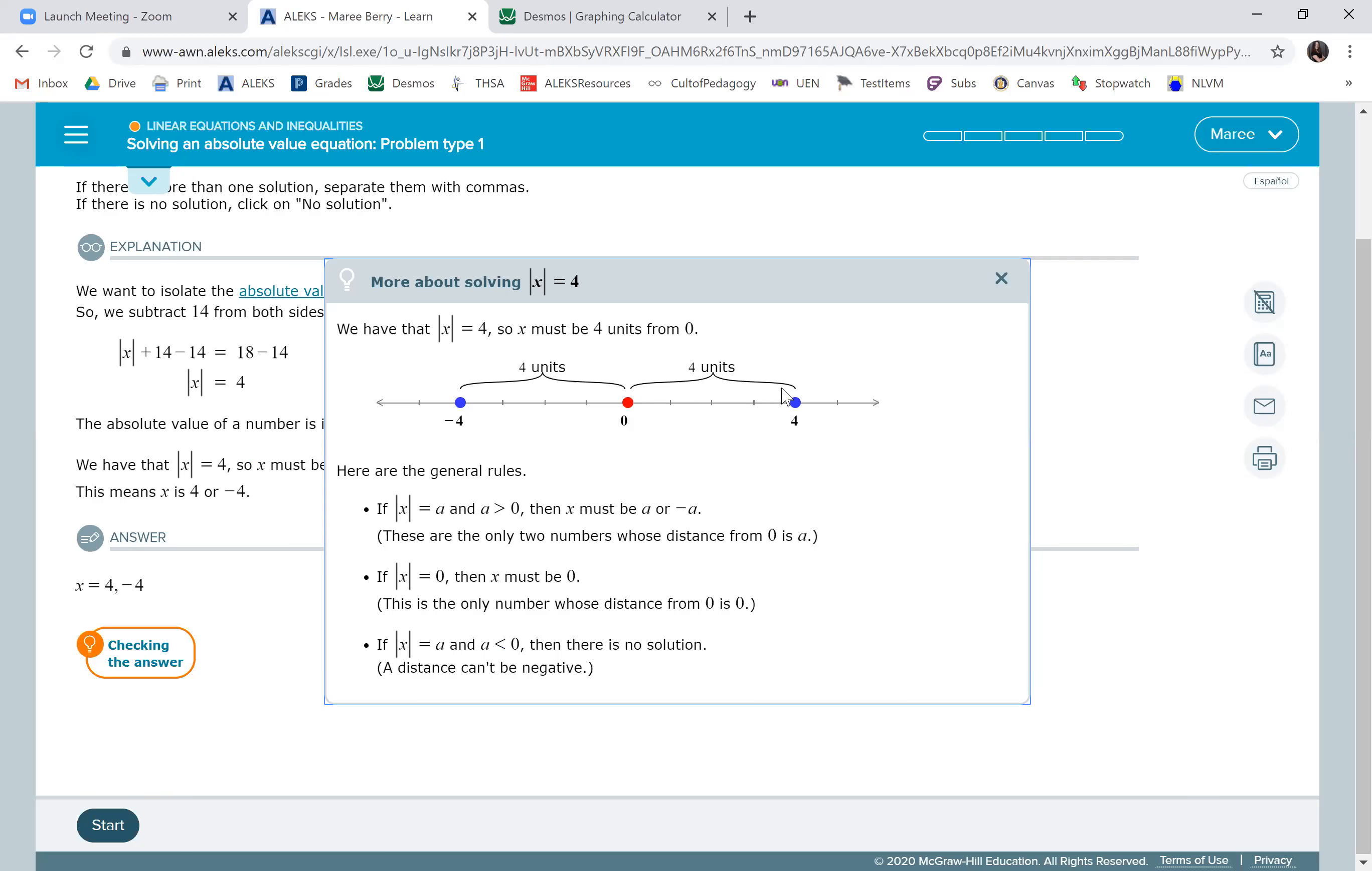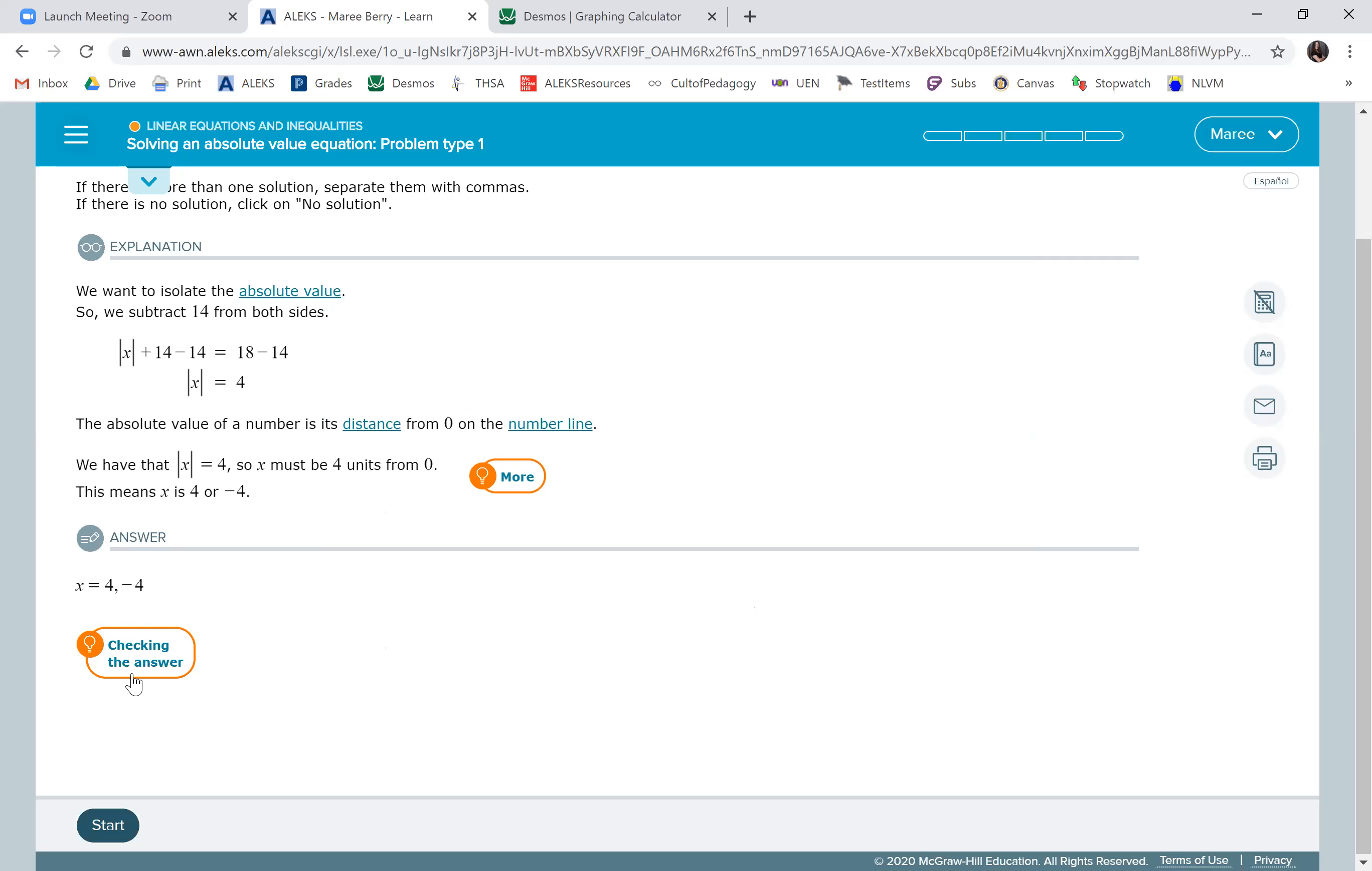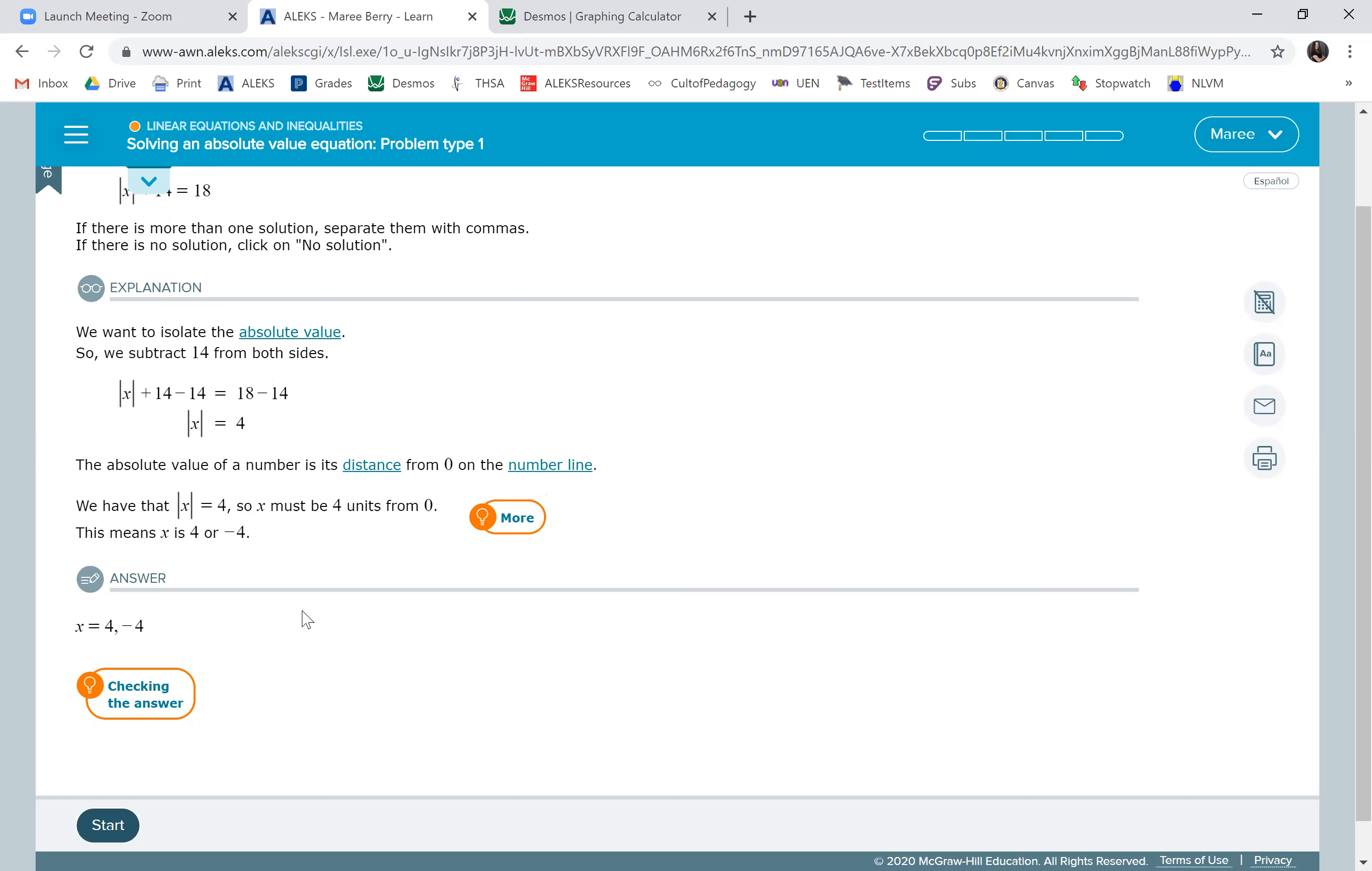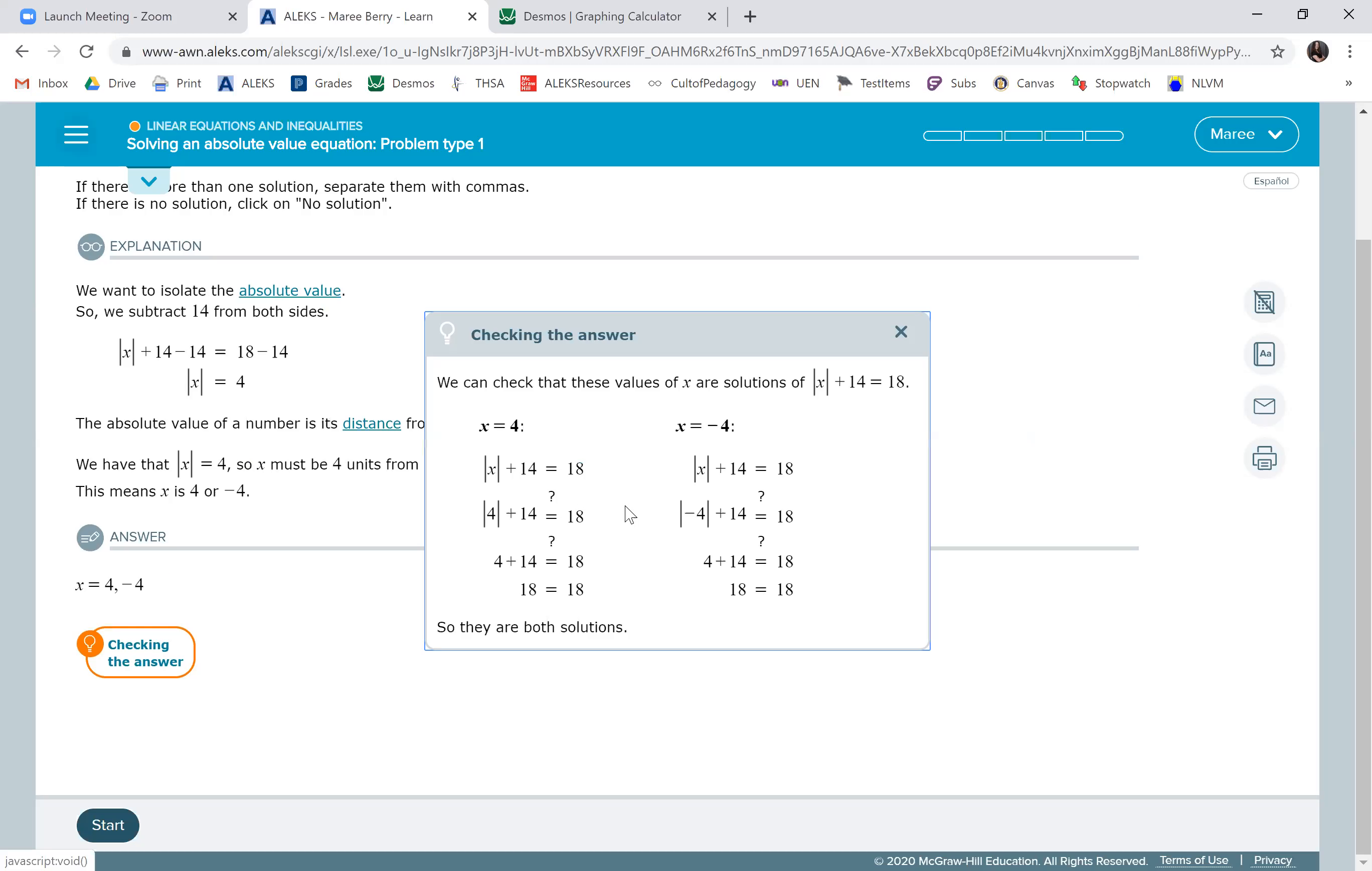So there's sometimes going to be two answers. We'll have negative four and four are both four units away from zero. And you can check your answer by plugging what you get back in to see if it works. So see how they plugged in the four and the negative four. And then the absolute value will be a positive four. And when you add 14, you'll get 18.